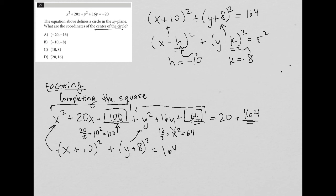If I plug negative 8 into k, that's how it would get to y plus 8. So my center is negative 10 comma negative 8, because my center is h comma k. So my answer is choice B.